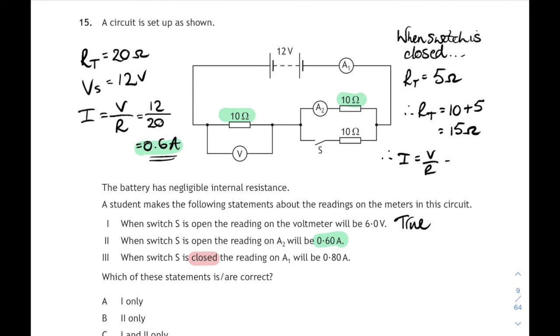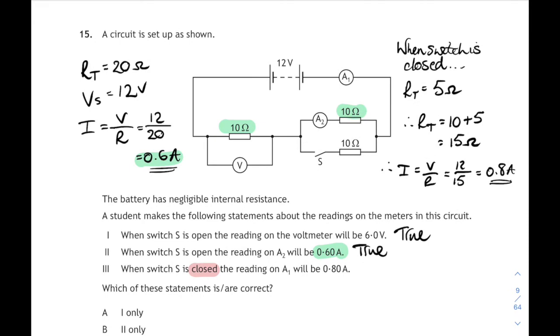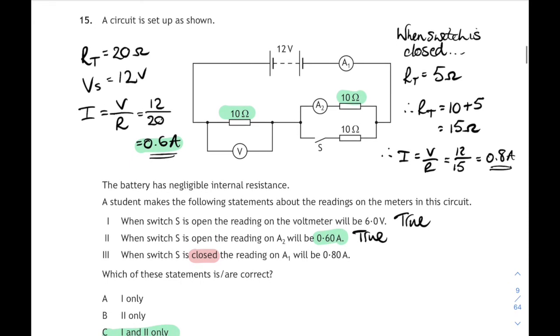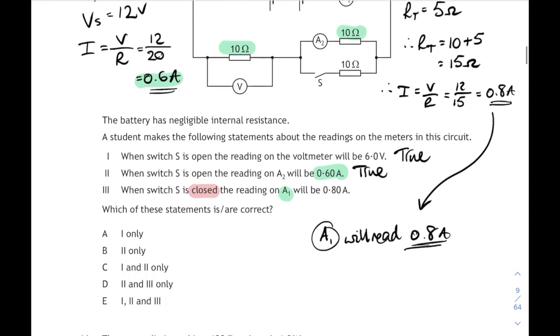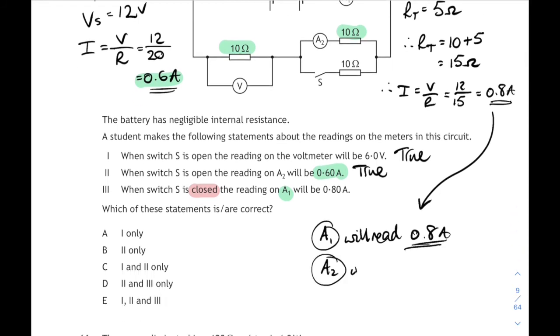If we add that to the series 10 ohm resistor then the total resistance of the circuit is 15. If we work out the current i equals v over r, 12 volts over a total of 15 ohms gives us 0.8 amps. So yes, ammeter one will be 0.8 amps, so that statement's true as well. But this question is kind of tricky because you've got two ammeters. Ammeter one will read 0.8 amps, but ammeter two, if you get caught out here, because the current splits, ammeter two will read 0.4 amps.